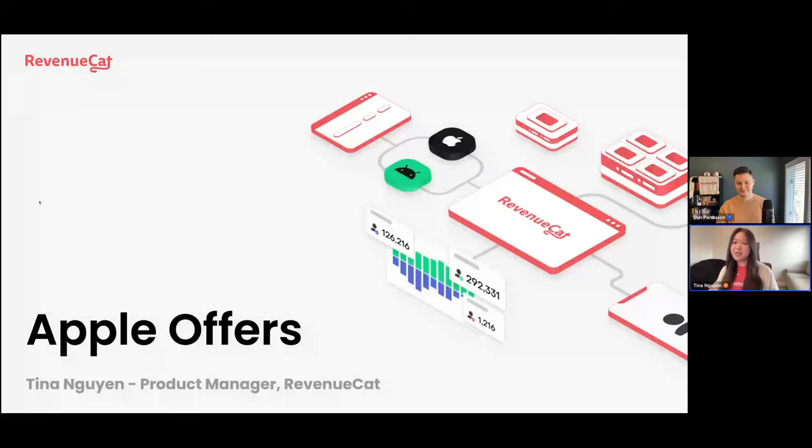Tina is going to join me — she's one of our product managers working on our CatForms team, the team that covers all of the different platforms that we care about. Hi, Tina. So I wanted to talk a little bit about offer codes and the data you can now get in RevenueCat related to Apple offers. Before I jump into what's new with RevenueCat — disclaimer, not a live demo, sorry everyone, but I hope it is still just as exciting.